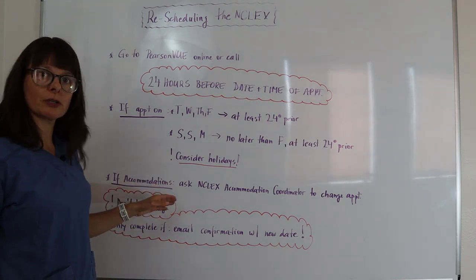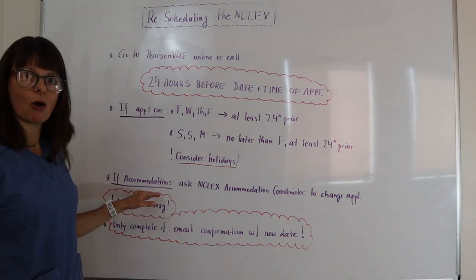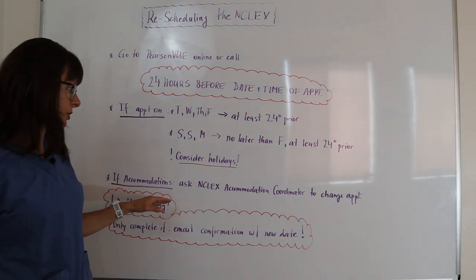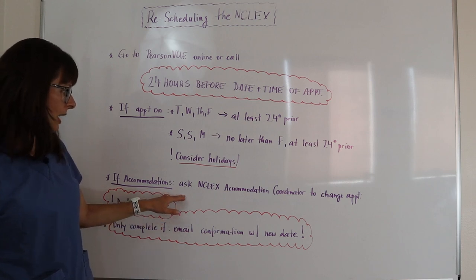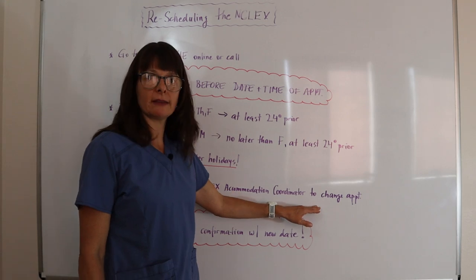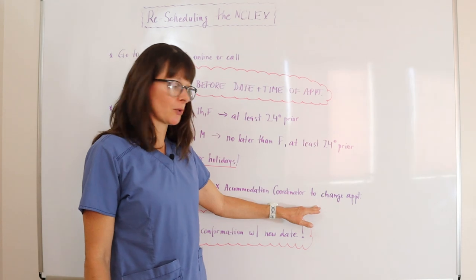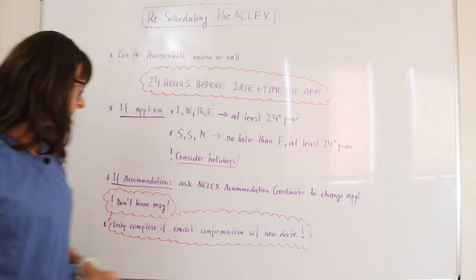If you are a student or graduate that has accommodations on their authorization to test, you have to ask your NCLEX accommodation coordinator to make the change of the appointment for you. And you will know who that person is and how to contact them.